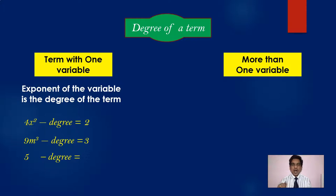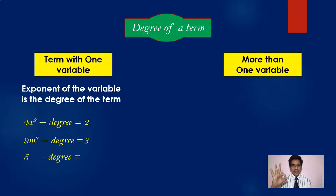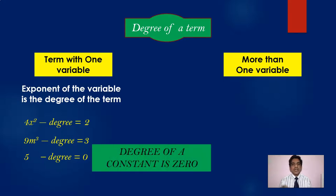Now consider the constant 5 — it's a constant term, there is no variable. You can write it as 5x power 0. Since the exponent of the variable is 0, the degree of 5 is 0. In general, the degree of a constant is always 0. So the degree of 10 is 0, and the degree of square root of 3 is also 0.